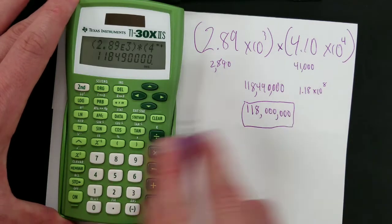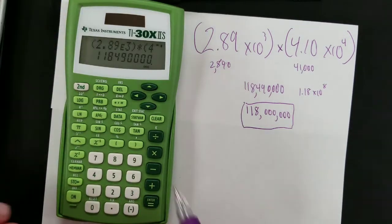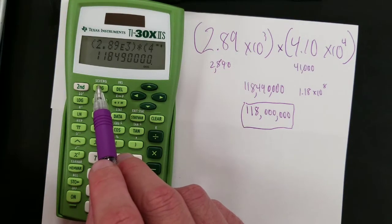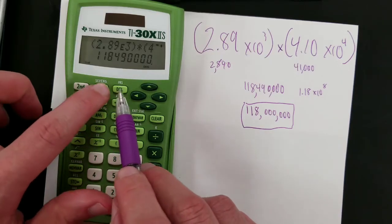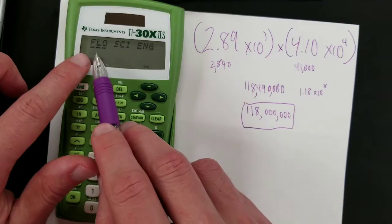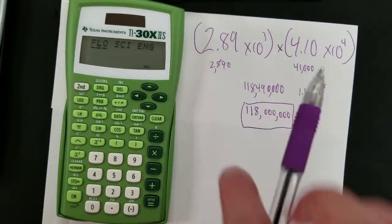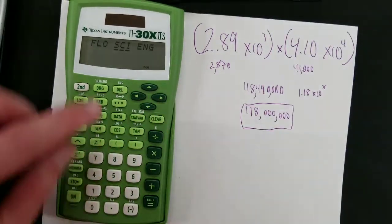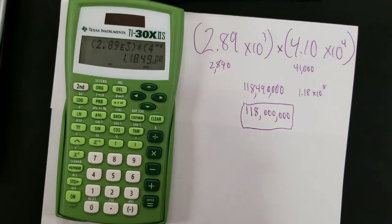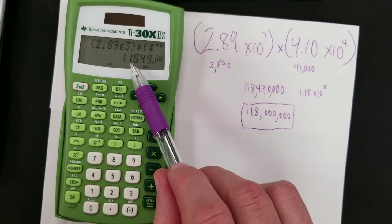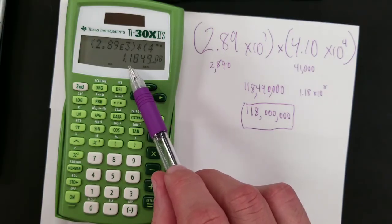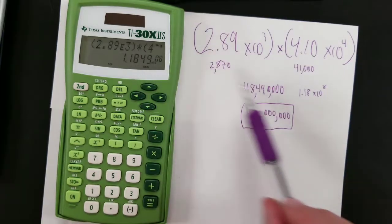Or you can have your calculator do it for you. Simply note the location of this function, SCI. It's a second function. So activate second function, go to it. This is floating decimal, which means just regular number. I select SCI for scientific notation. Press enter to confirm selection. And now the calculator will give all output in the form of scientific notation. Check it out. 1.18 times 10 to the 8th.